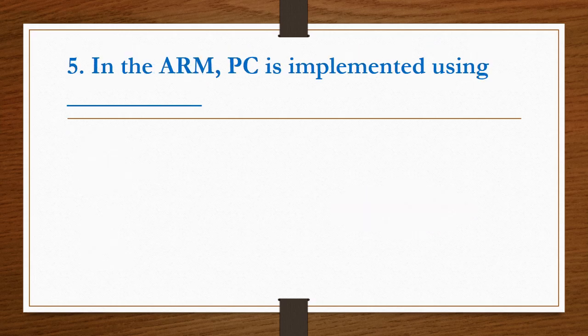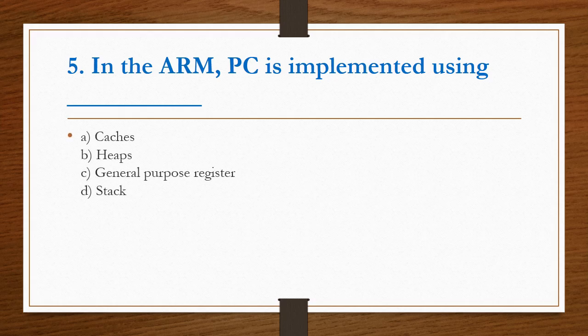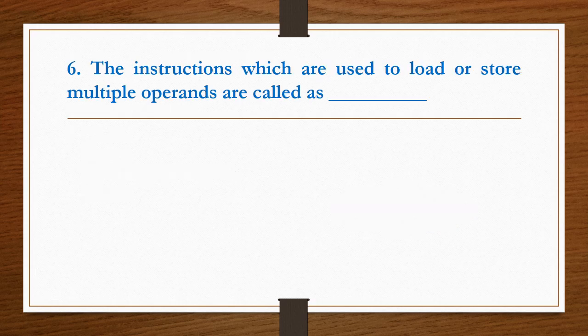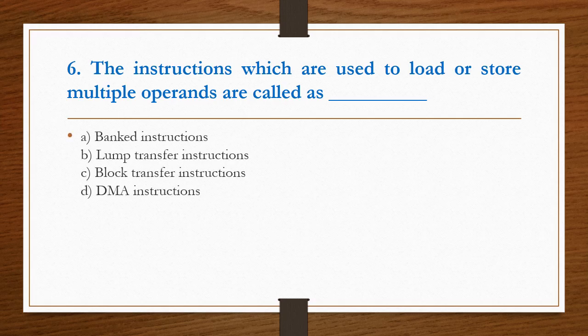In the ARM, PC (program counter) is implemented using General Purpose Register. Option C is the right answer. The instructions which are used to load or store multiple operands are called Block Transfer Instructions. Option C is the right answer.